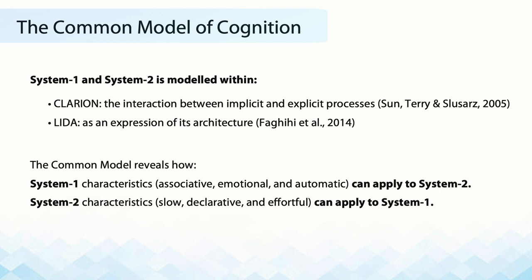Various architectures have sought to model System 1 and System 2, such as Clarion and Leida. We're going to use the Common Model to precisely identify the base components that give rise to the general terms used in System 1. We're going to show, using the Common Model, that System 1 characteristics — associative, emotional, and automatic — can apply to System 2, and that many System 2 characteristics, such as being declarative and effortful, can apply to System 1.